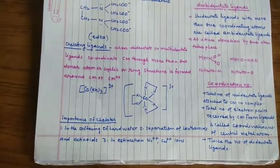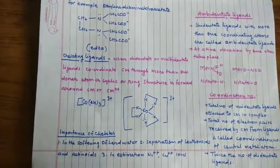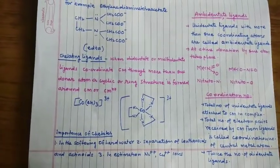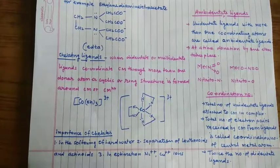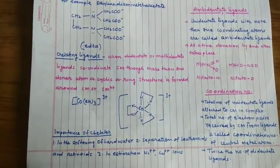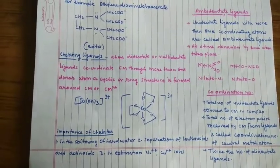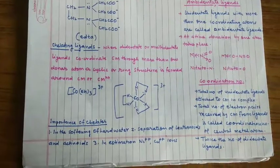Clear? तो ऐसे ligands को हम ambidentate ligand बोलेंगे। The unidentate ligand with more than one coordinating atoms or two different coordinating atoms are called ambidentate ligand. CN-, NO2-, SCN- ये सभी ambidentate ligand हैं।